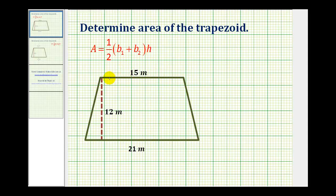Looking at our trapezoid, let's call this side here b₁ and this side here b₂.